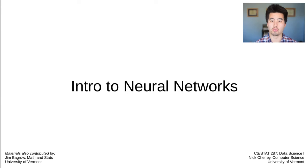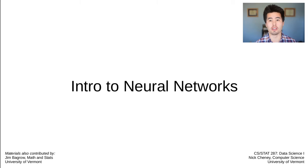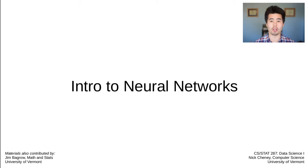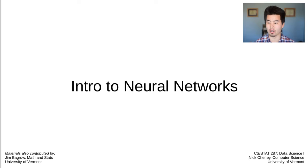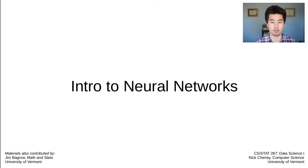Hey folks, welcome back to another Data Science One lecture. Today, in our quest for more and more complex models, we're going to talk about neural networks. This will be the first part in a two-part series on neural networks, since these are machine learning approaches to many different types of data and applied fields. Today we'll give a broad overview of what neural networks are and why they might be important, and next time we'll turn to a more practical approach for specific data types or subfields.